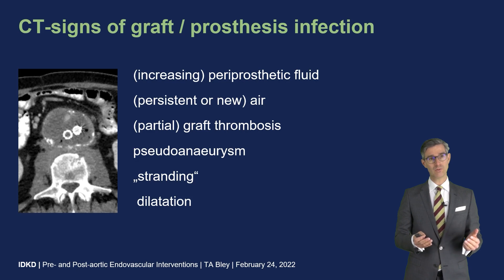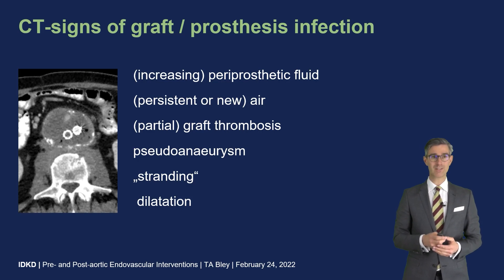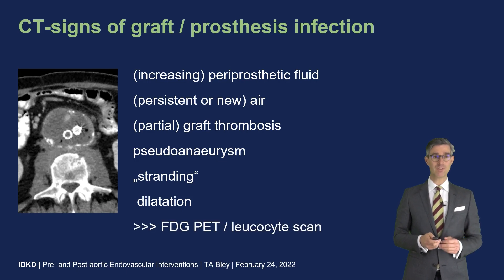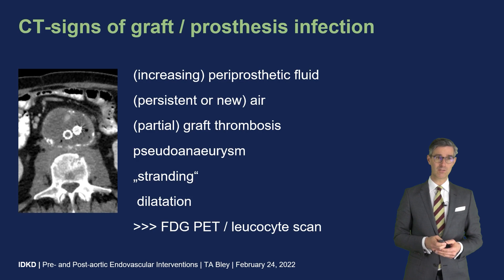Signs of graft or prosthesis infection include increasing periprosthetic or peri-stent fluid, persistent new gas bubbles — as seen in our case — partial graft thrombosis — as seen in our case — pseudoaneurysm, stranding — also seen in our case — and dilatation. If in doubt, FDG PET is the most sensitive technique to detect inflammation, and if unavailable, a leukocyte scan is a good alternative.